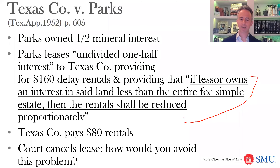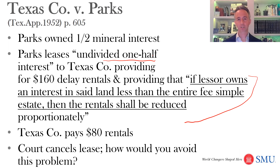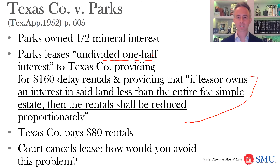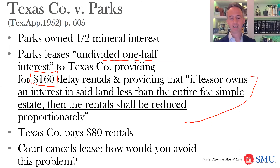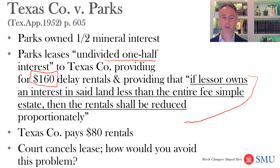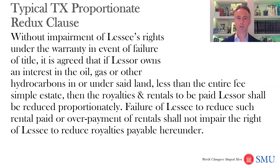Why does the court cancel the lease? The court says: did they really own less than the entire fee simple estate? They do have the entire fee simple estate in that one-half interest. Fee simple means you own it from here to the end of time — you can devise it, etc. — and they do have that entire estate in that one-half interest. There also seems to be a sense that it's a little shady to advertise $160 and then have fine print meaning you only get $80 in delay rentals. With an unless clause, if you don't pay delay rentals accurately, you can lose the lease — and that's exactly what happened here.